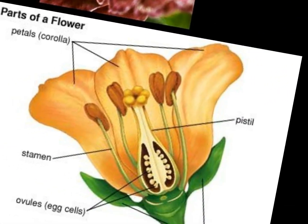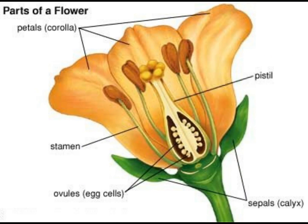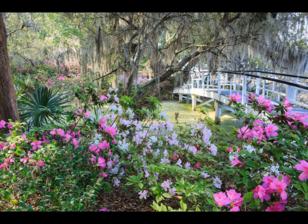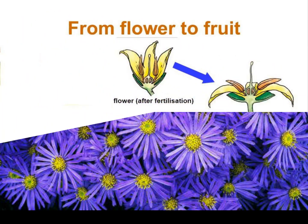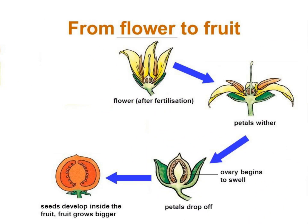The parts of a flower. Most plants have flowers. Flowering plants are the biggest group of plants. Flowering plants produce seeds, fruits and flowers.